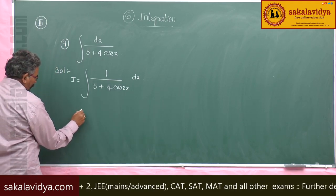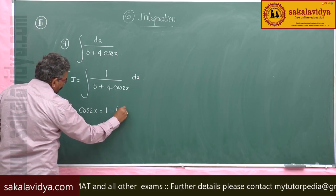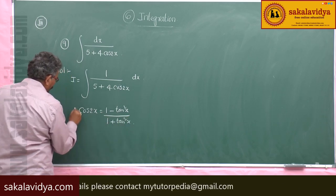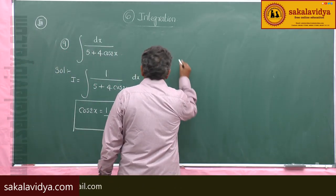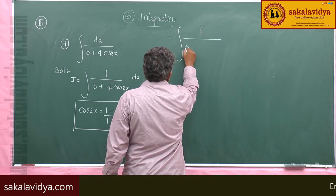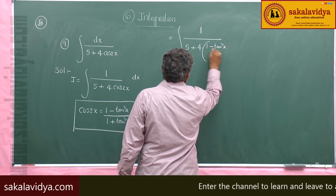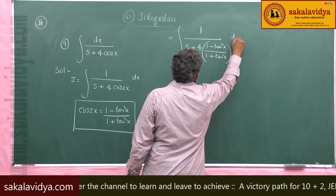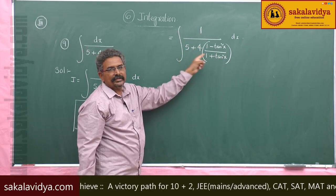We know from trigonometry that cos 2x = (1 - tan²x) / (1 + tan²x). Substituting, we get integral of 1 by (5 + 4 · (1 - tan²x)/(1 + tan²x)) dx. Taking (1 + tan²x) as LCM in the denominator, the numerator becomes (1 + tan²x).